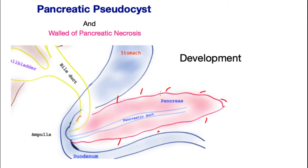One consequence of the inflammation is that there is collection of peripancreatic fluid. When this peripancreatic fluid gets organized after four weeks and forms a wall around it made of scar tissue called granulation tissue, with fluid within it, this condition is then called a pseudocyst.